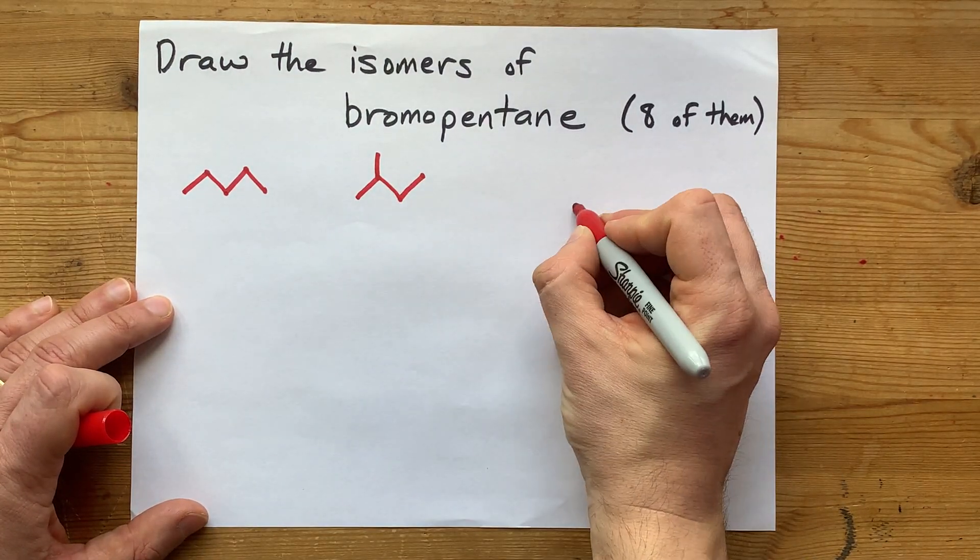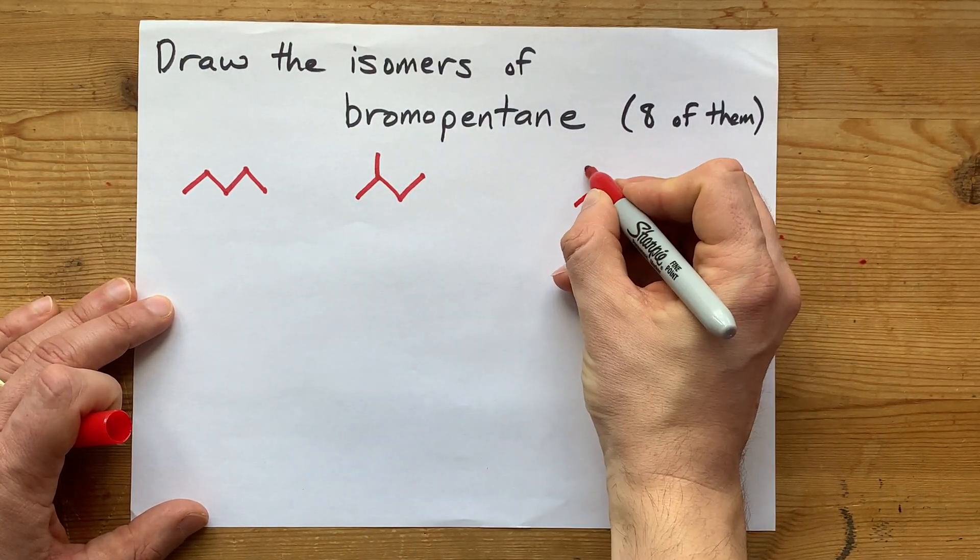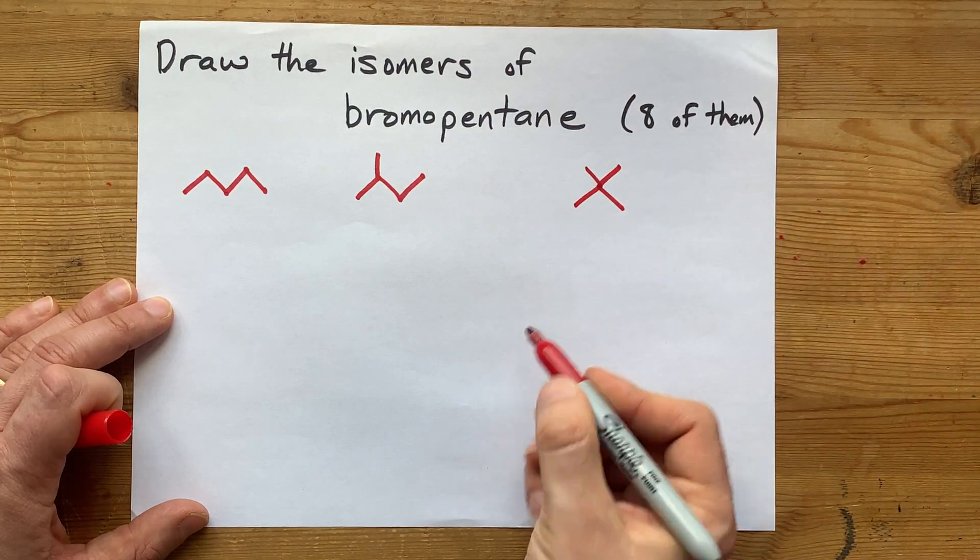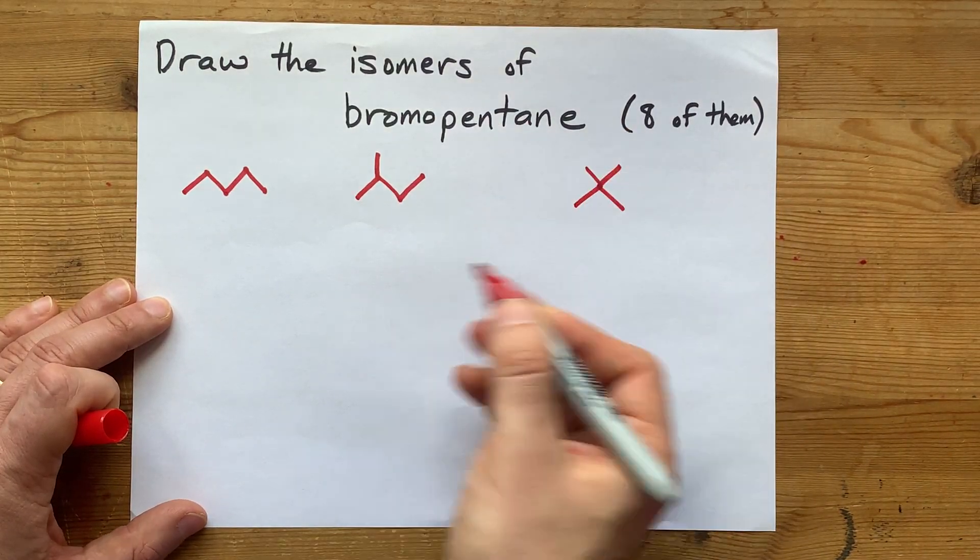But what if it was only three carbons long, and then we had two methanes sticking out of the same carbon? That's also an isomer of pentane.